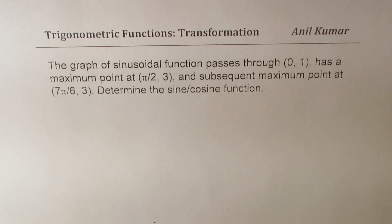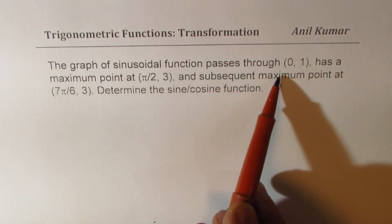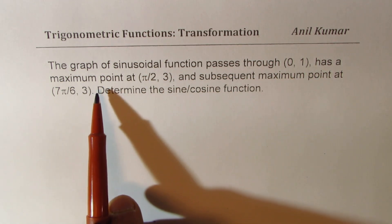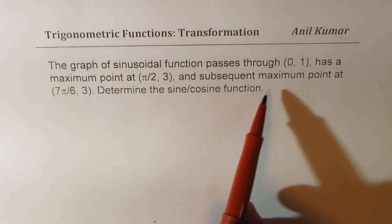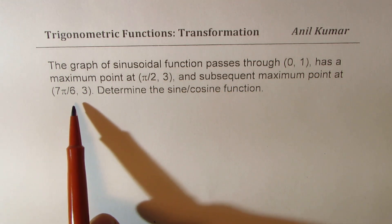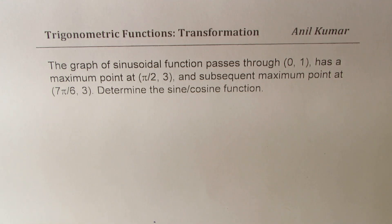Now this question is based on trigonometric functions. We'll see how to find equation of a sinusoidal function from given conditions. The graph of sinusoidal function passes through (0,1), has a maximum point at (π/2, 3) and subsequent maximum point at (7π/6, 3). Determine sine cosine function.